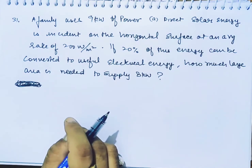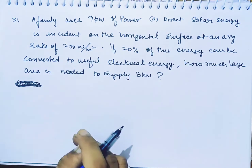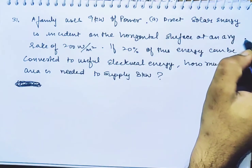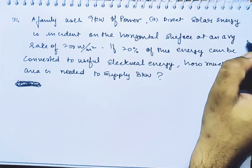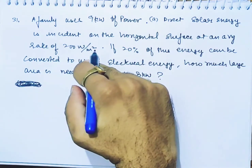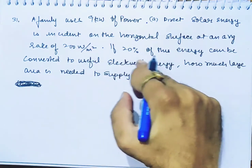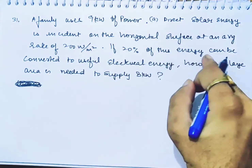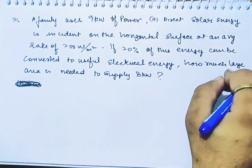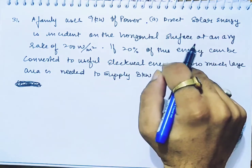A family uses 9 kilowatt of power. Direct solar energy is incident on the horizontal surface at an average rate of 200 watt per meter square. If 20% of this energy can be converted to useful electrical energy, how much large area is needed to supply 8 kilowatt?